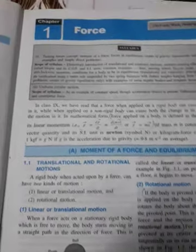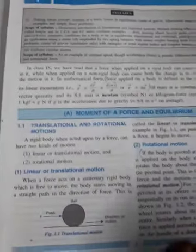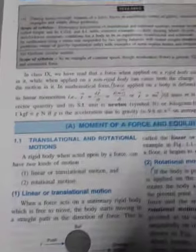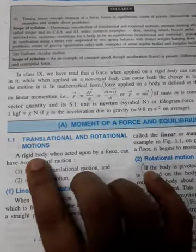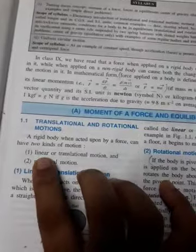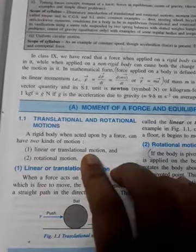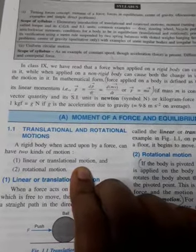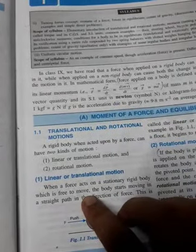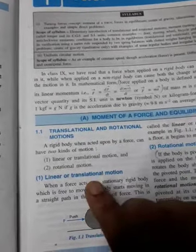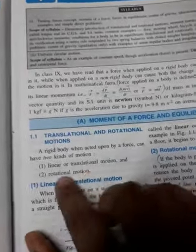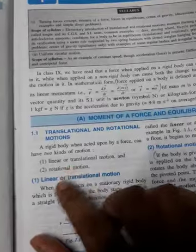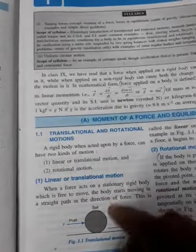Our next topic is force. When you apply force on a rigid body, it shows two types of motion: one is linear or translational motion, and one is rotational motion. Linear motion is when the body moves in a straight line, and rotational motion is when a body moves round and round about a fixed point.